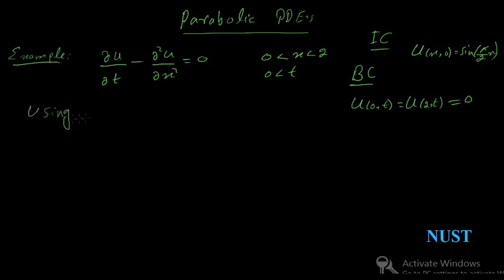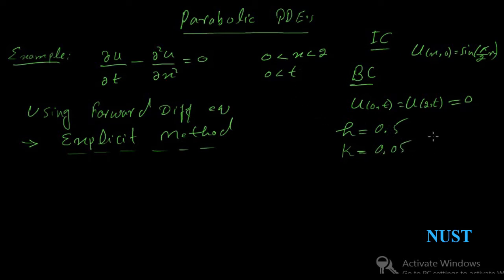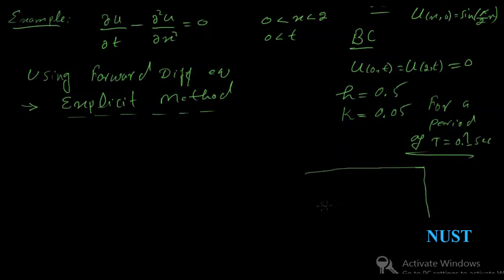There are two methods to solve these equations: using the forward divided difference formula, termed as the explicit method, or using the backward divided difference formula, termed as the implicit method. Let me first try the explicit method. The spatial step size is 0.5 and the time step size is 0.05 seconds. The total time period is 0.1 seconds. So let's make some grid points, known as discretization.